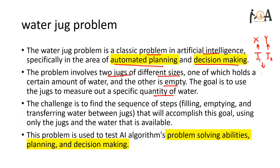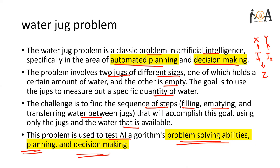At the end, we require Z amount of water in a particular jug. The challenge is to find the sequence of steps — filling, emptying, and transferring water between jugs — that will accomplish this goal using only the jugs and the water available. This problem is used to test artificial intelligence algorithms, problem solving abilities, planning, and decision making.